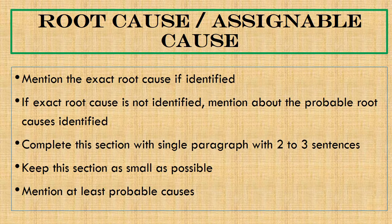After the investigation details part, the next part is the root cause or assignable cause part. Here we should mention the exact root cause identified. If the exact root cause is not identified, mention the probable root causes. Always complete this section with a single paragraph of two or three sentences, and keep this section as small as possible.